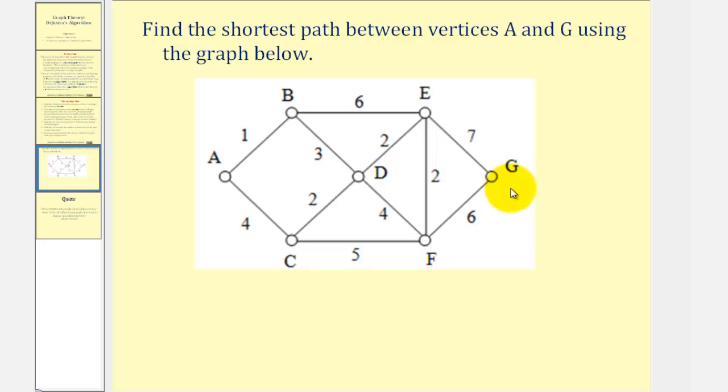So we'll mark vertex G with a zero, indicating it's zero units from the end. And we'll also label G as current. Now we'll look at all the vertices that lead to G, which would be E and F in this case.